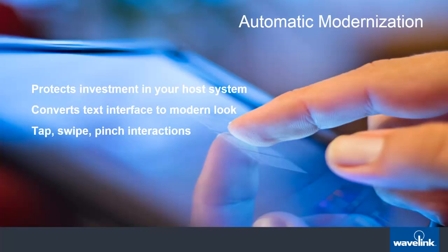We mentioned that one of our guiding principles when designing Velocity was to mitigate the challenges associated with application migration. We understand that our customers have a huge investment in their host applications — the last thing you want to do to accommodate mobility is to replace your WMS, for example. With Velocity, you don't have to modify or migrate your host applications; we protect that investment for you. Velocity receives the host application screens the same way terminal emulation would, and then converts those screens automatically to the modern UI suited to the device's display size, resolution, etc., and includes the multi-touch gestures users are familiar with, such as tapping, pinching, panning and more.